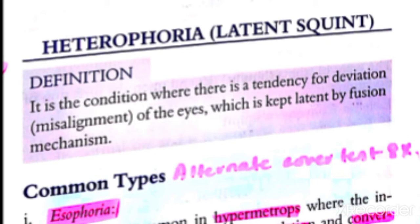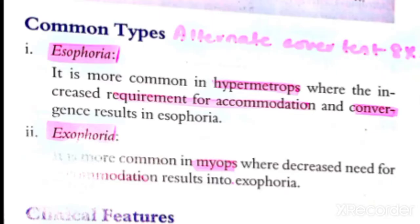When the patient is tired, their fusion breaks down and the binocular fusion mechanism fails. In those cases, people have a latent squint which is a hidden squint. Common types are esophoria, associated with hypermetropia, and exophoria, associated with myopia. Normal individuals without refractive error are not usually affected by latent squint.